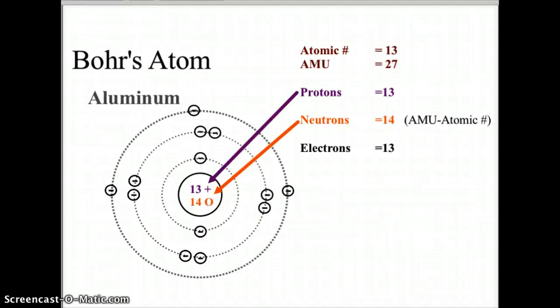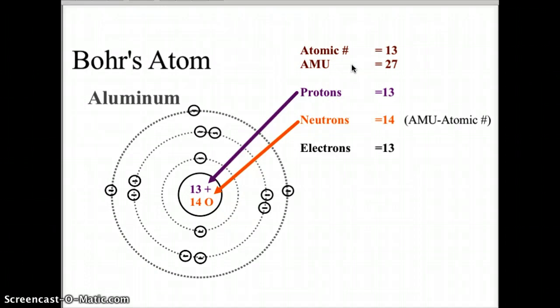Let's look at the basics of Bohr's model of the atom using aluminum as an example. We take basic information from the periodic table, starting with the atomic number, which is 13 for aluminum. The AMU, or atomic mass unit, is the average mass rounded to a whole number, so 26.98 is rounded up to 27. The proton number defines the element, and since the atomic number is 13, aluminum will also have 13 protons.